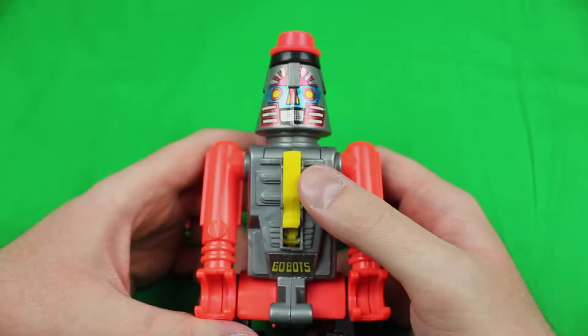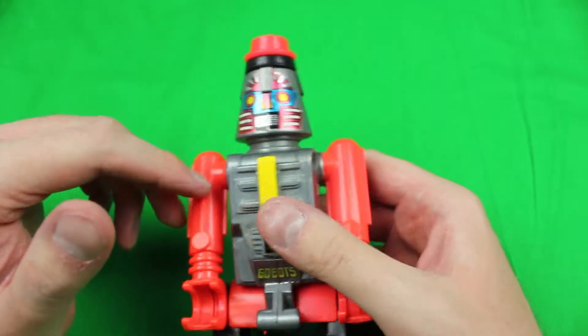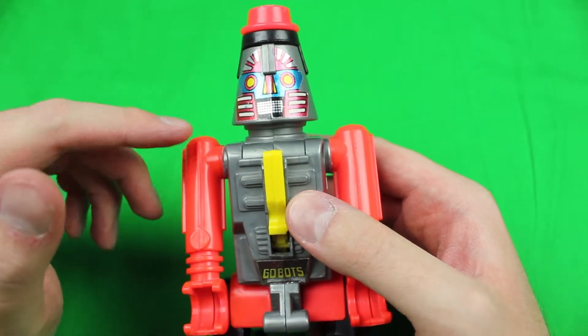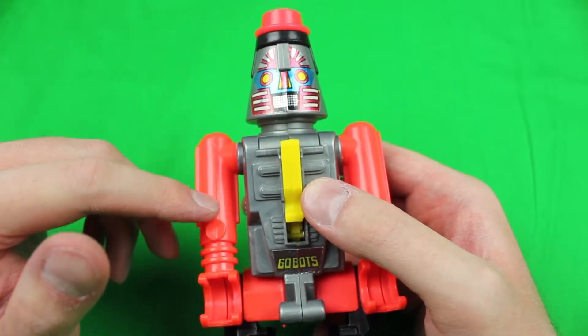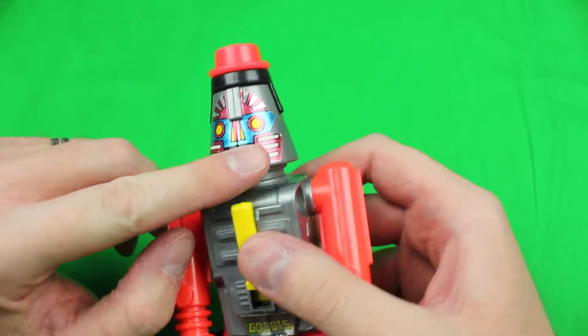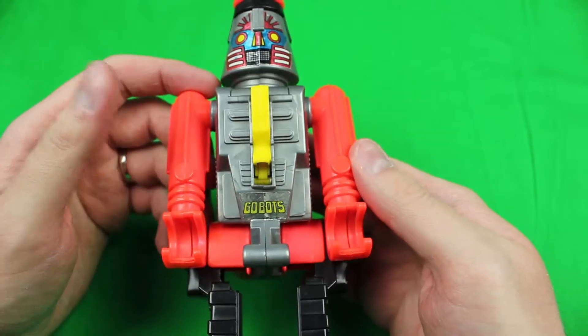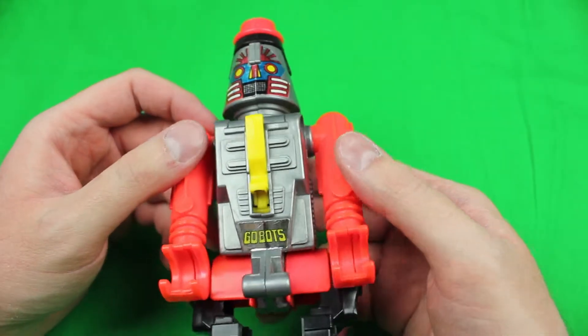So the first one we're going to take a look at is the pistol. All right, so here he is in his robot form. He's actually the second pistol in the series. The first one had blue pieces instead of red. He's got a really cheap sticker for a face. I don't know, he's really not much to look at.